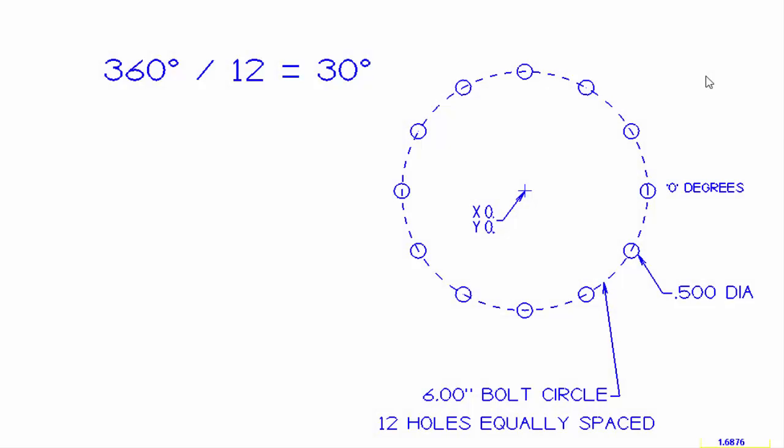Hello, this is Tom. In this video I'm going to show you a couple of different ways to calculate the x and y coordinates of the holes in a bolt circle. For this example, we're using a 6 inch bolt circle with 12 holes equally spaced on that bolt circle.